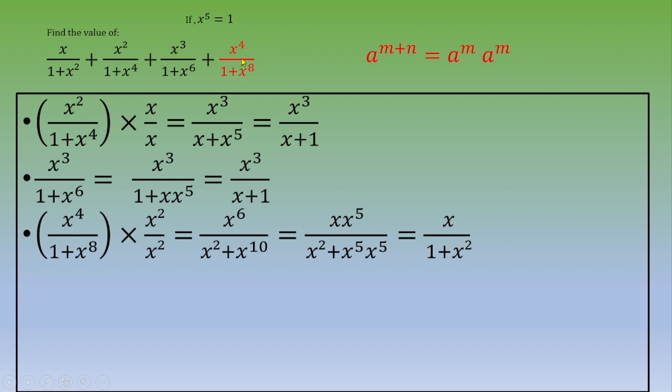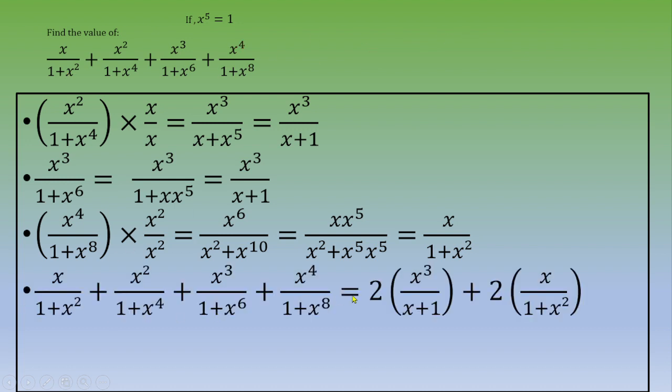So term number four equals term number one. So this sum can be written as 2 times x cubed over x plus 1. This is the value of term number two or term number three. Plus 2 times x over 1 plus x squared. This is the value of term number one or value of term number four.